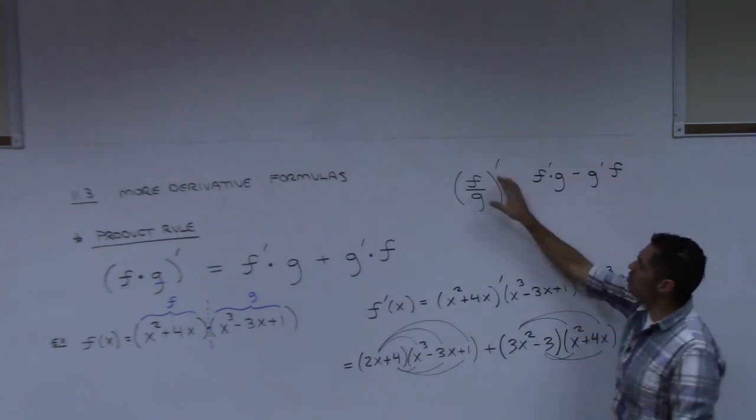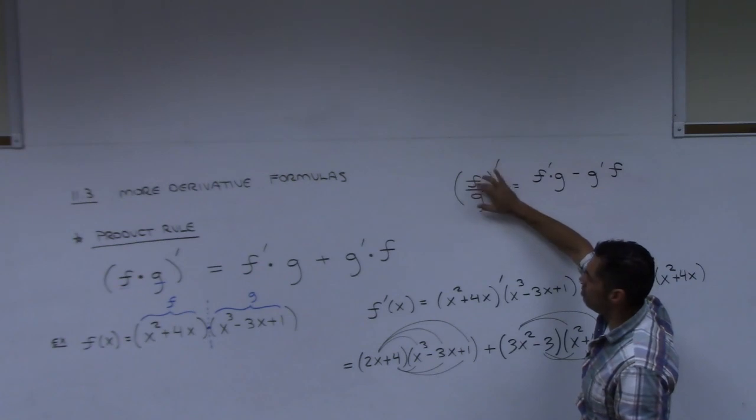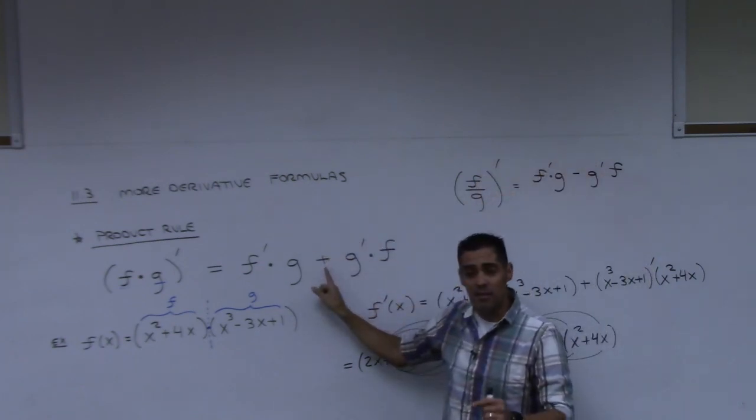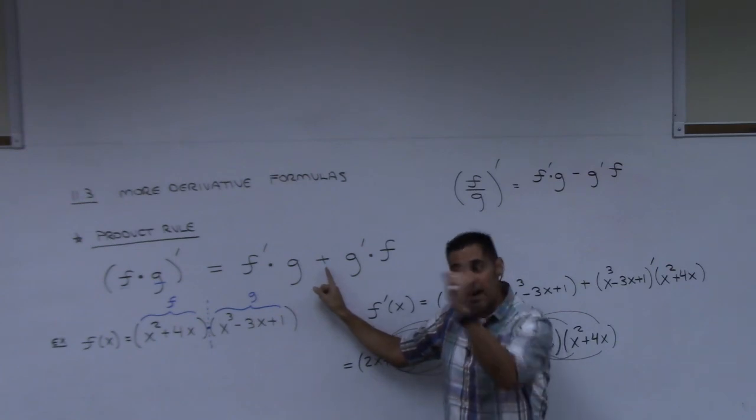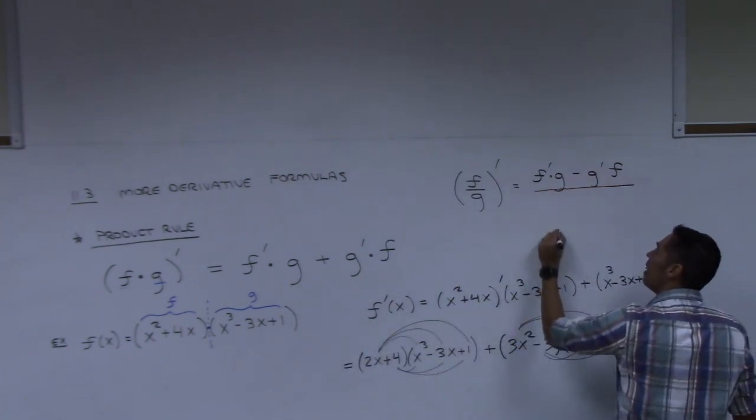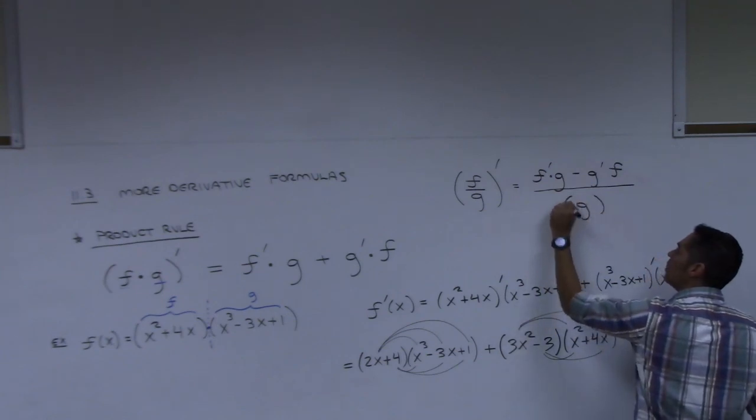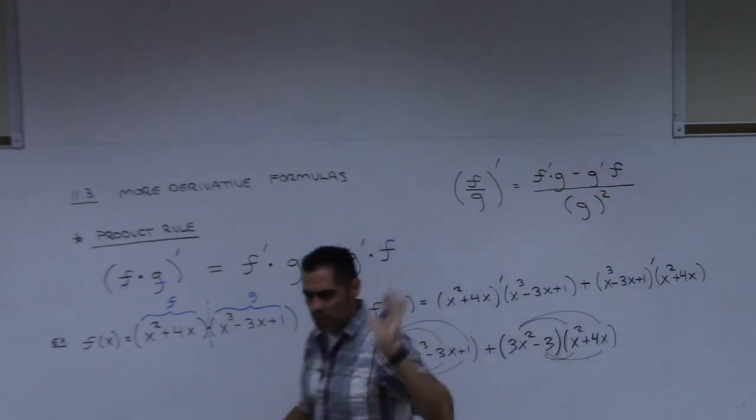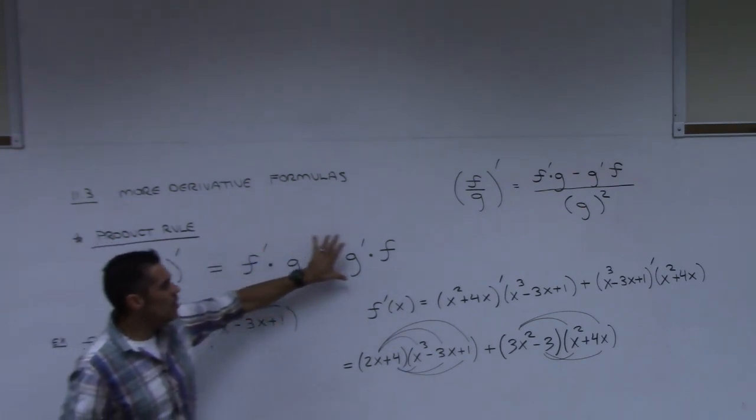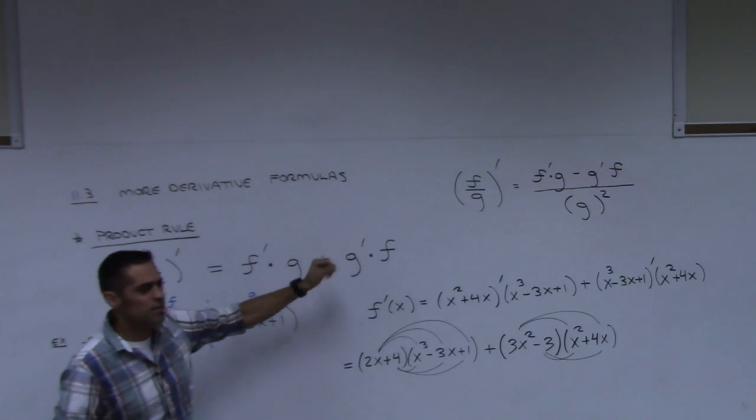So the quotient, to do a division, to take derivative of a quotient or a fraction, you're going to do this formula, but instead of a plus, a minus. And here's the big kicker. You have to divide the entire thing by the denominator squared. So whatever was down here, you've got to square it. We'll do that later. But I wanted you to at least see that it's almost this formula just with a minus.